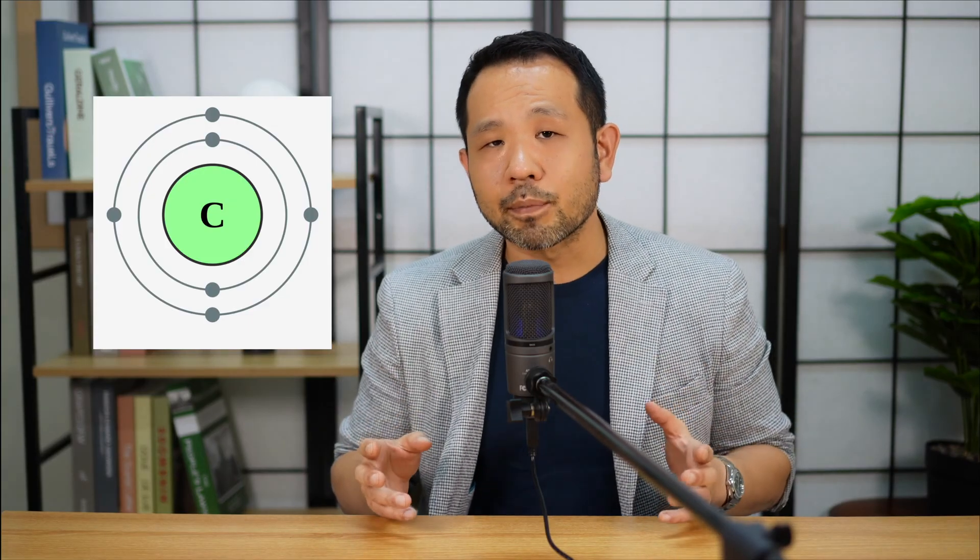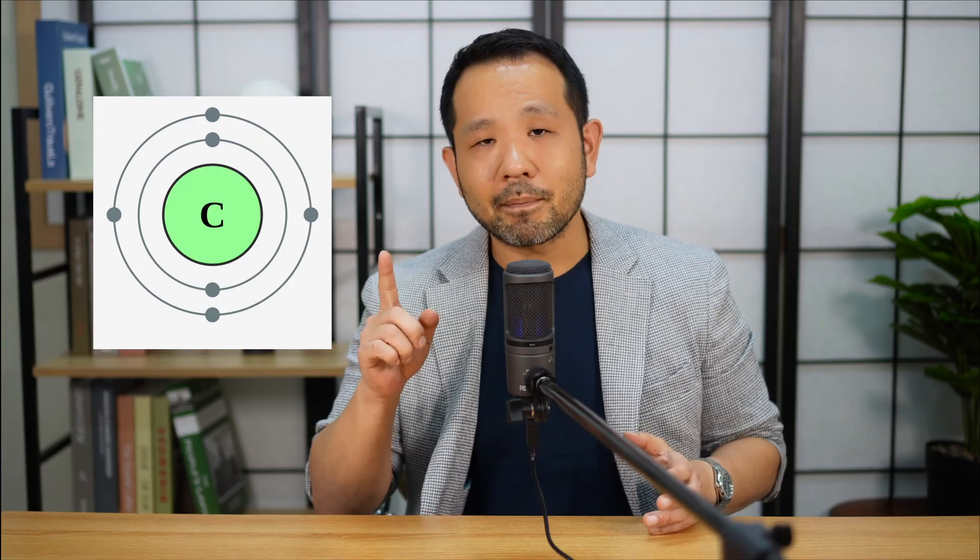Why is carbon so good at making large molecules? Carbon has an atomic number of six, which means it has six protons and, in its atomic state, six electrons — two in its first orbital and four in its second orbital. Those four valence electrons in the second orbital point in four directions: north, south, east, and west. This is the maximum number of valence electrons that could all be unpaired and ready to make covalent bonds.